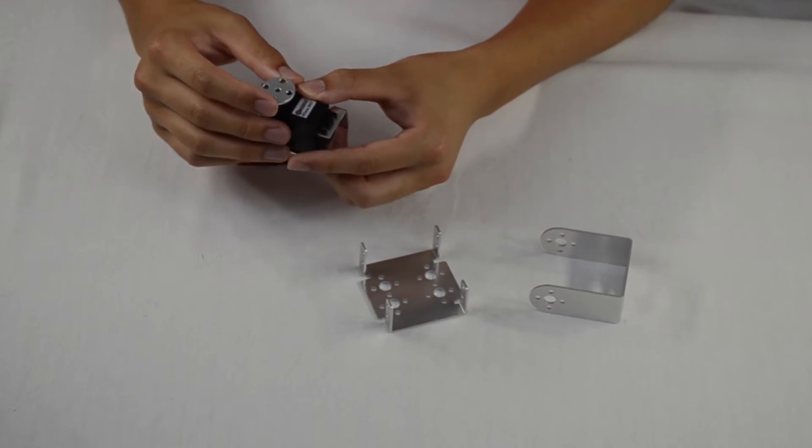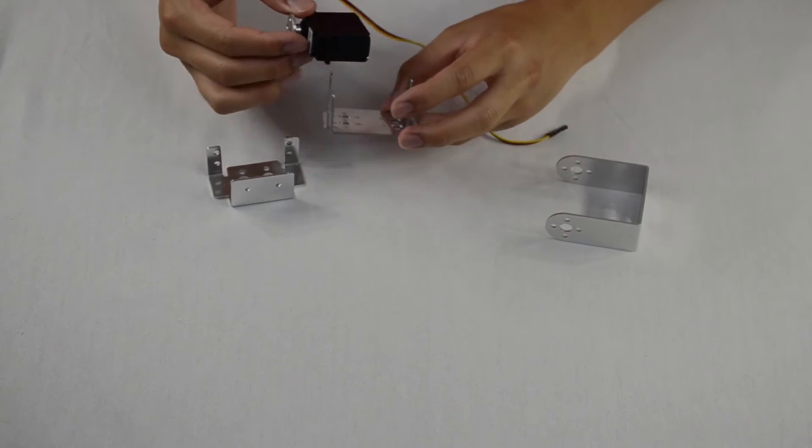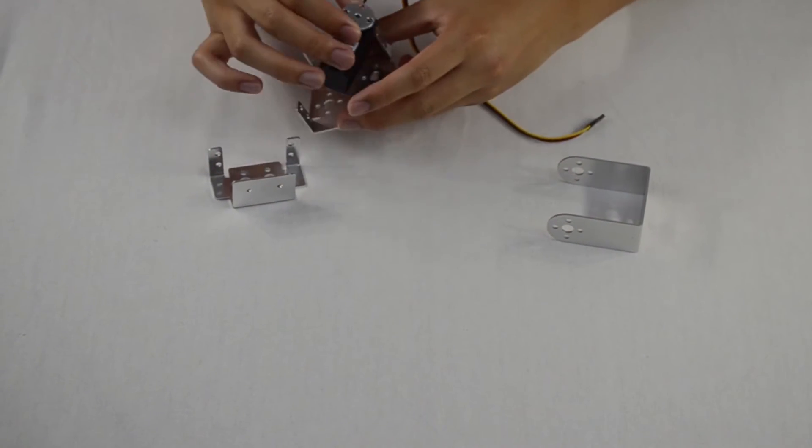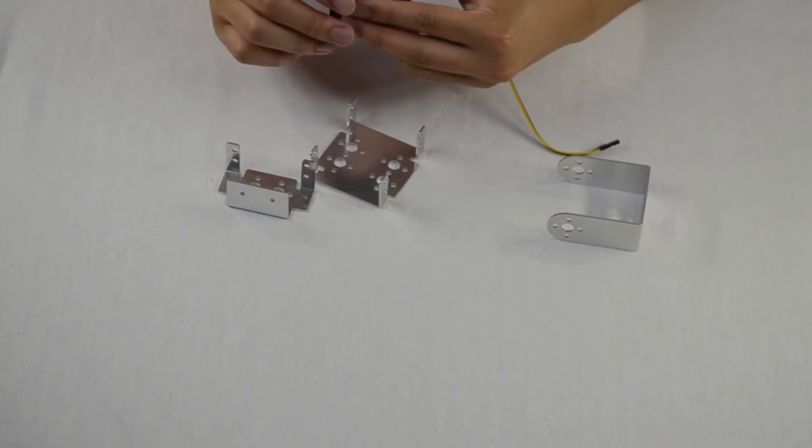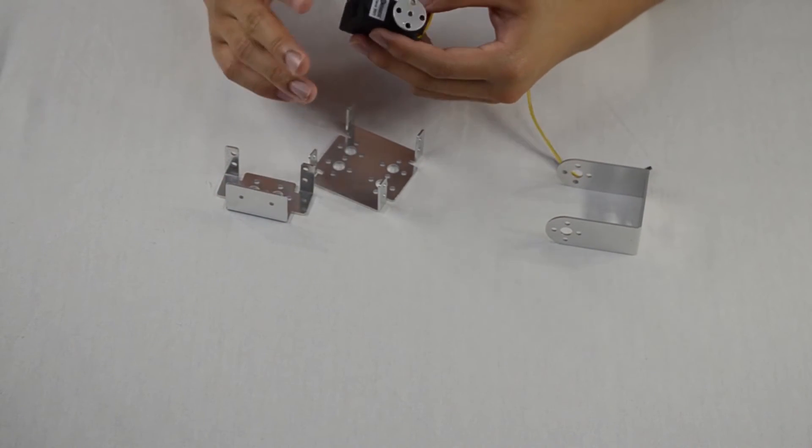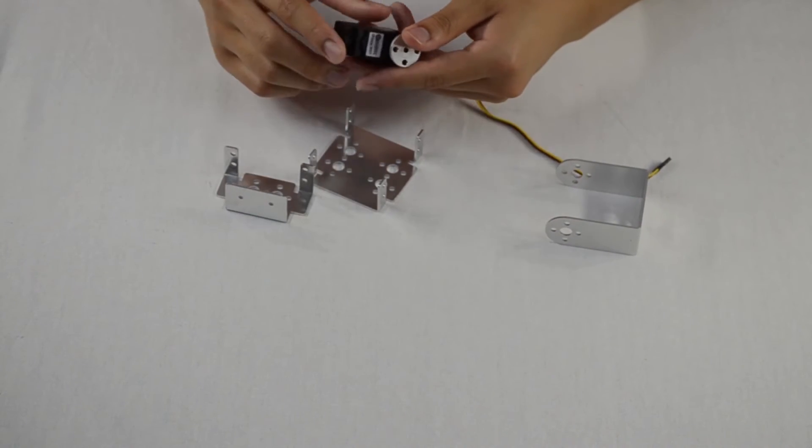With your double servo bracket, this is actually combining the power of two servos so that it makes the actual servo much stronger and outputting more torque, but also having the same power and having it be very reliable.